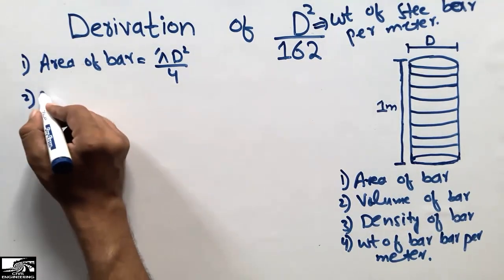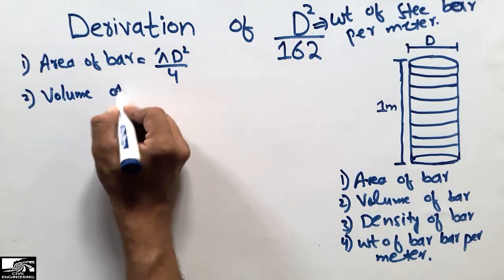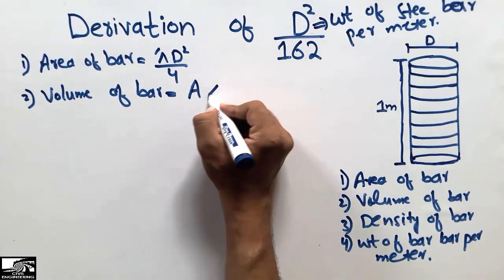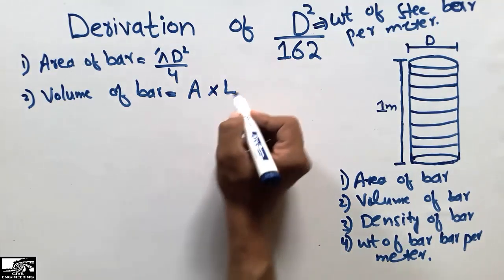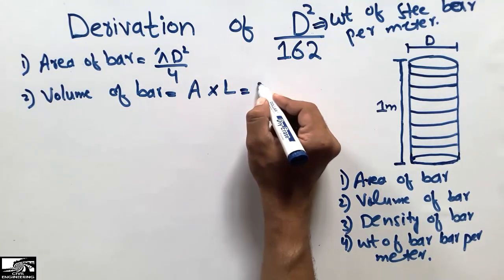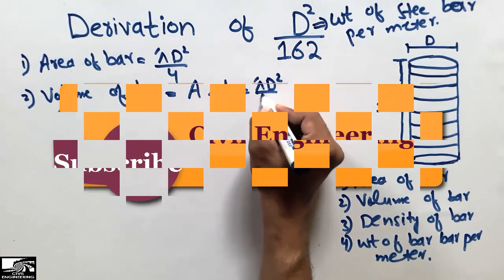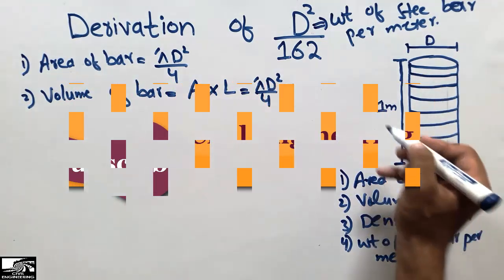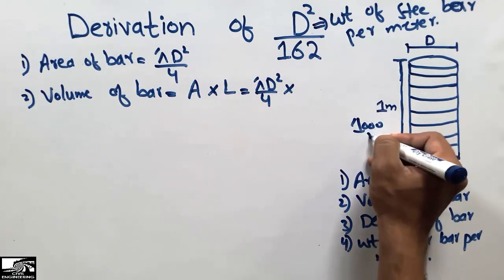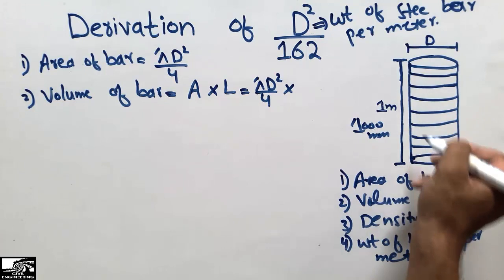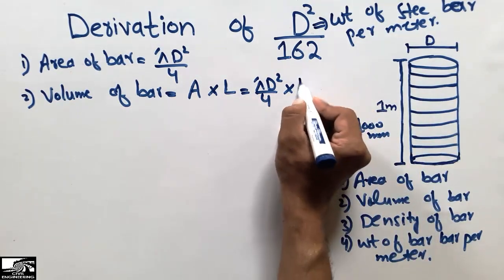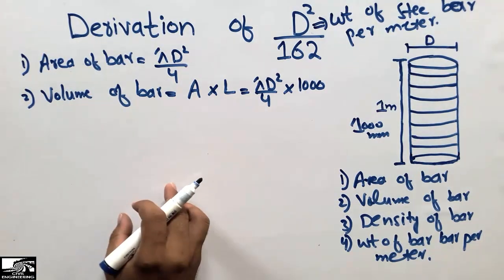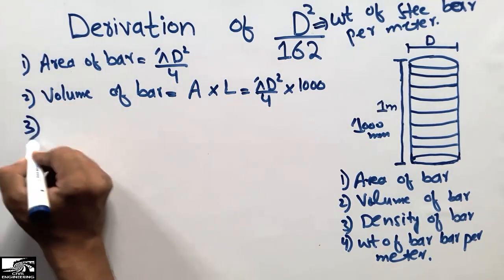The second step is to find the volume of the bar. Volume of the bar equals area multiplied by the length of the bar. The area is πD²/4, and the length is 1 meter, which we can also write as 1000 millimeters, since one meter equals 1000 millimeters. So the length of the bar is 1000 mm.